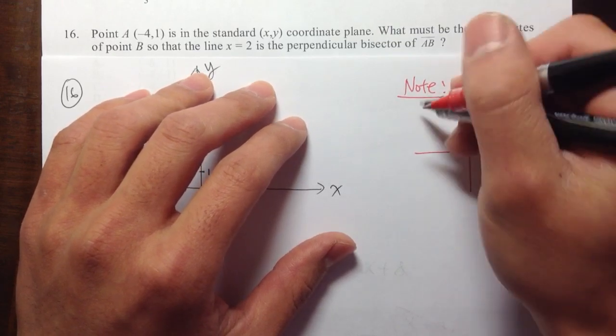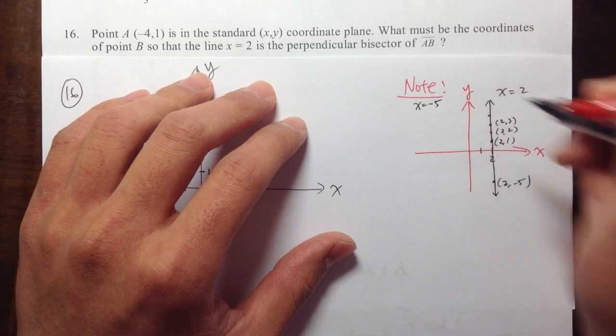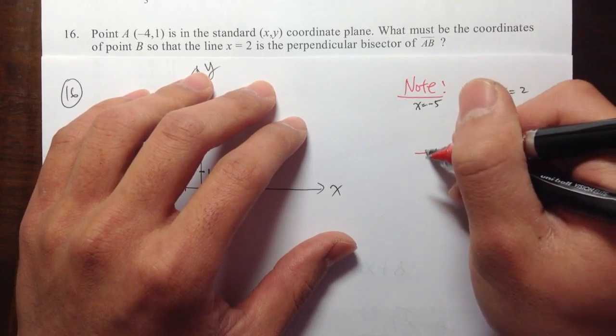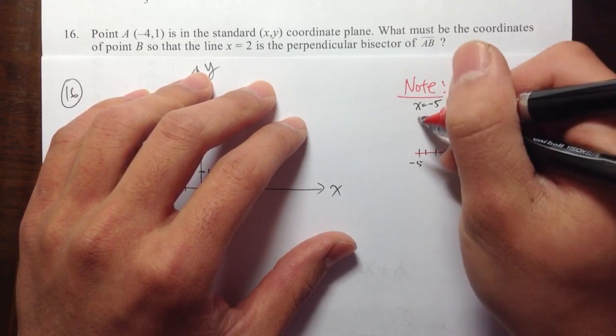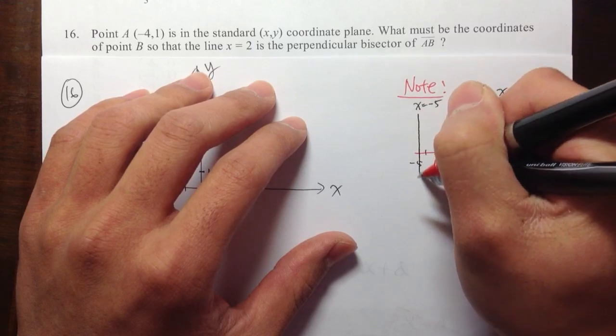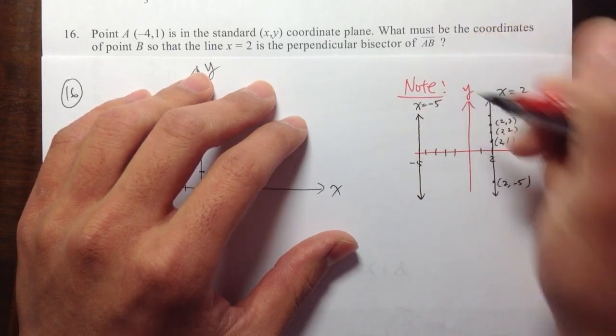Likewise, if you have, let's say, x is equal to negative 5, for example, then you will just go 1, 2, 3, 4, 5, negative 5 right here, and then it's a vertical line when you have x equal to some number.